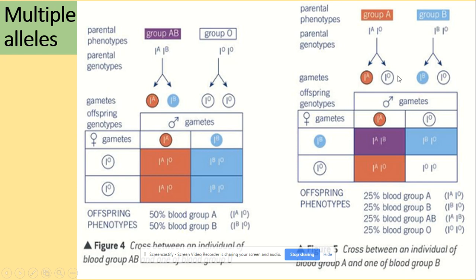Now let's look at this example: a group A parent and a group B parent. The gametes produced will be I^A and I^O for the group A parent, and I^B and I^O for the group B parent. Once we put them in a Punnett square — gametes of one parent on one side, the second parent on the other — here we get a ratio of one to one to one to one, because we produce four different blood groups in the offspring. That's everything for codominance and multiple alleles — see you later!